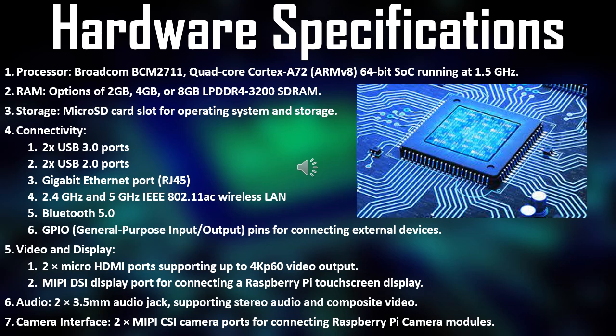Additionally, the device supports 2.4GHz and 5GHz IEEE 802.11ac wireless LAN for wireless networking, as well as Bluetooth 5.0 for connecting peripherals and accessories. Raspberry Pi also features general-purpose input/output (GPIO) pins, which allow users to connect external devices such as sensors, actuators, and displays.